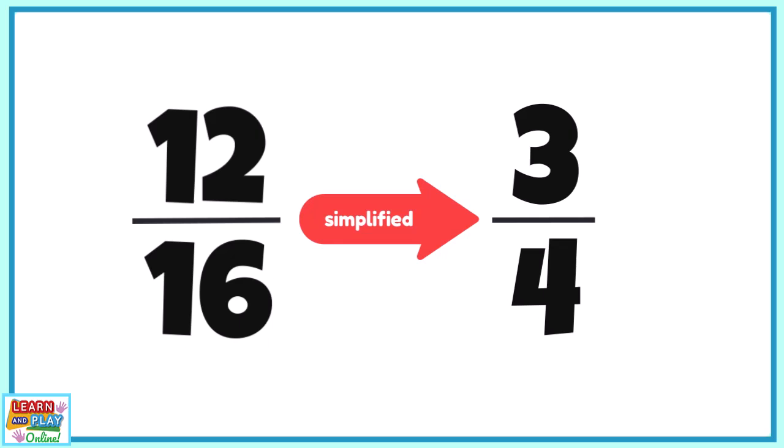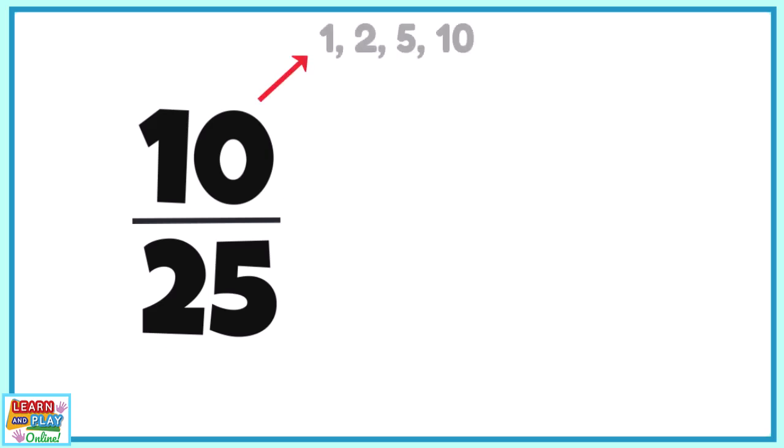Let's do another example. This time, we are simplifying 10 over 25. Let's first list out the factors for both the numerator and the denominator so we can find the highest common factor. The factors of 10 are 1, 2, 5, and 10. The factors of 25 are 1, 5, and 25.